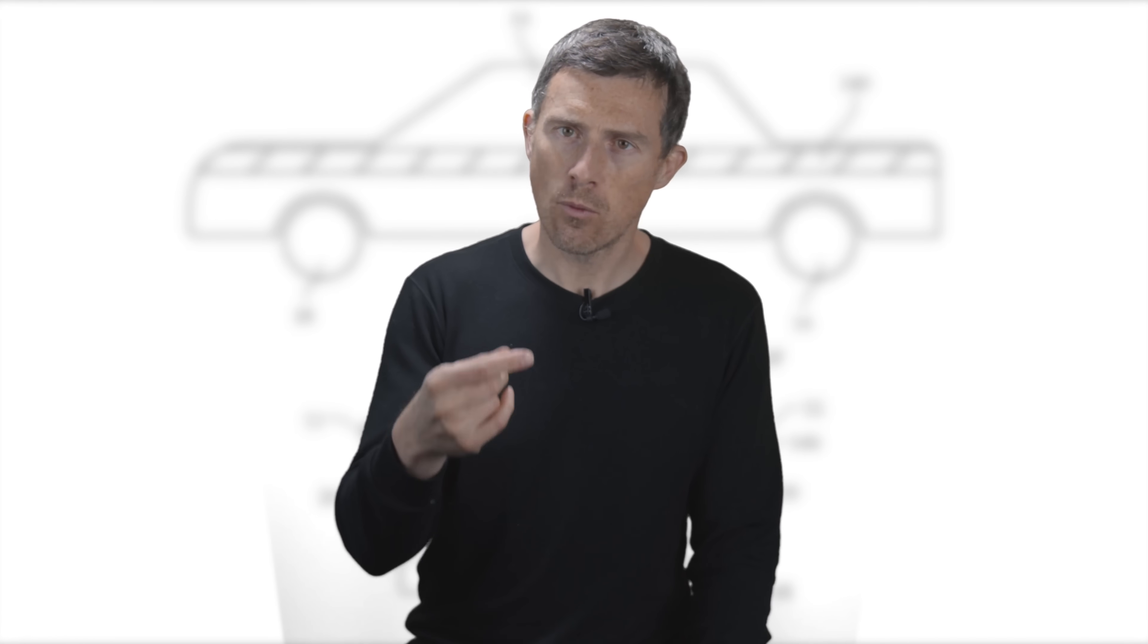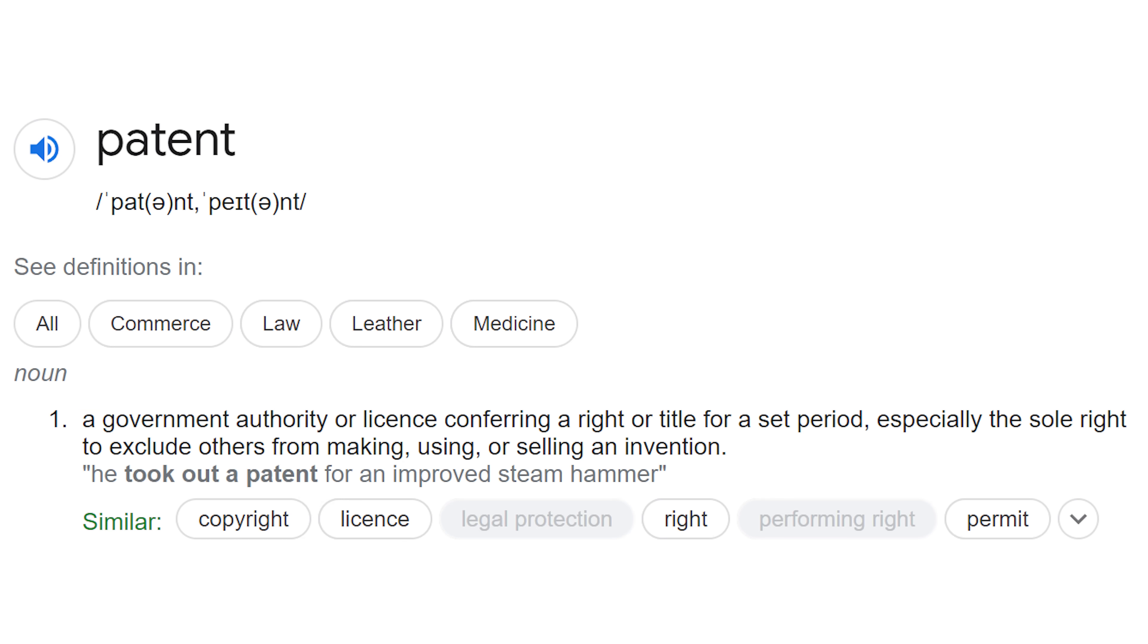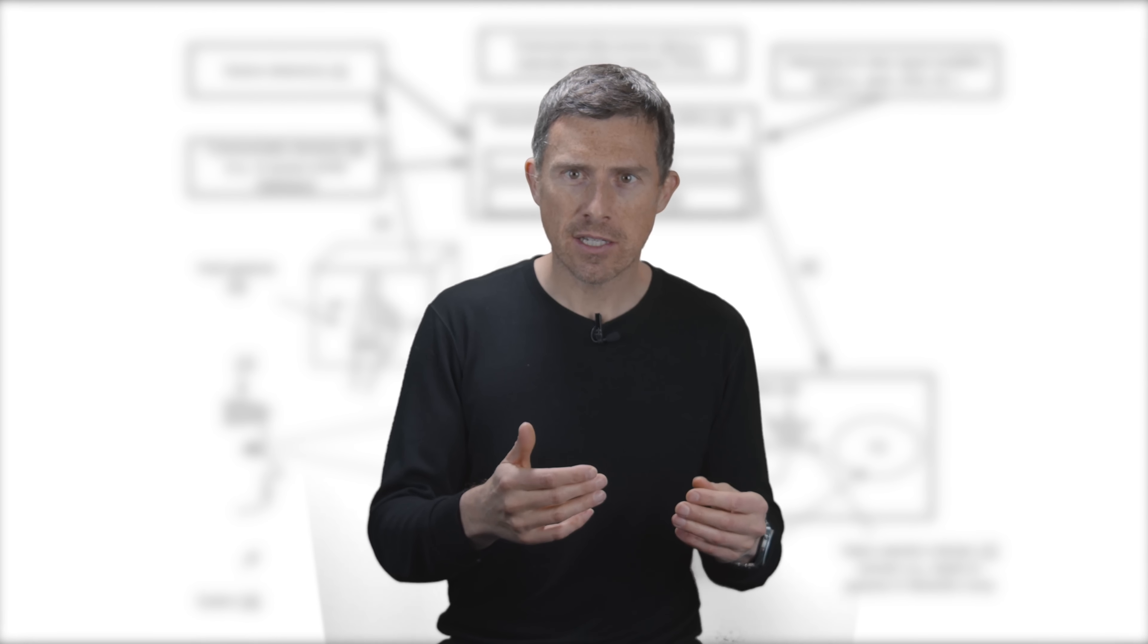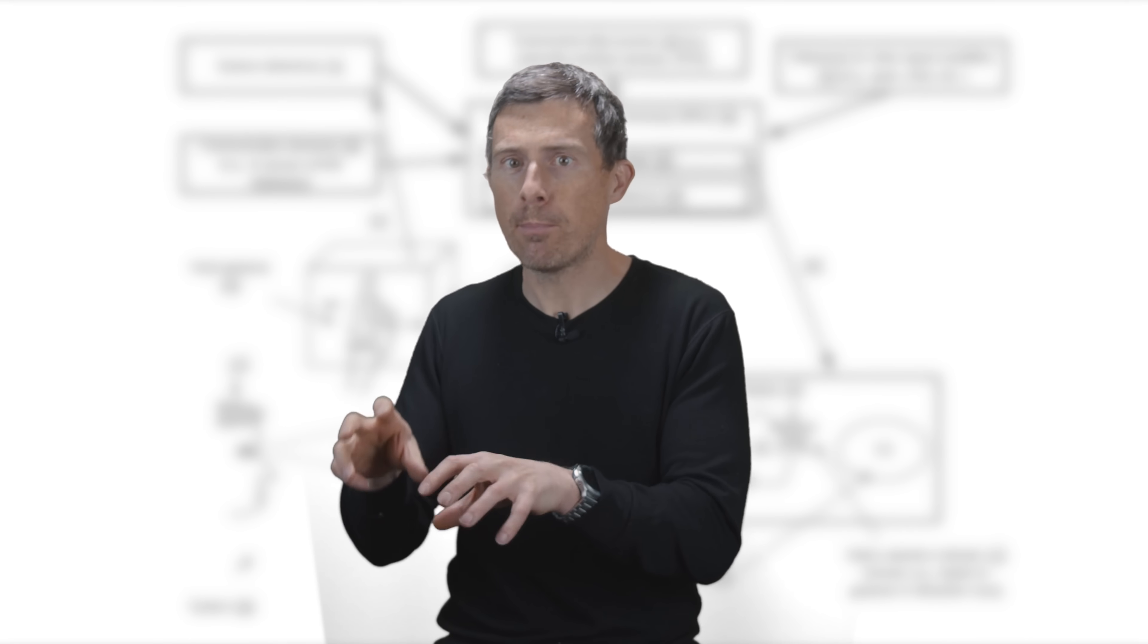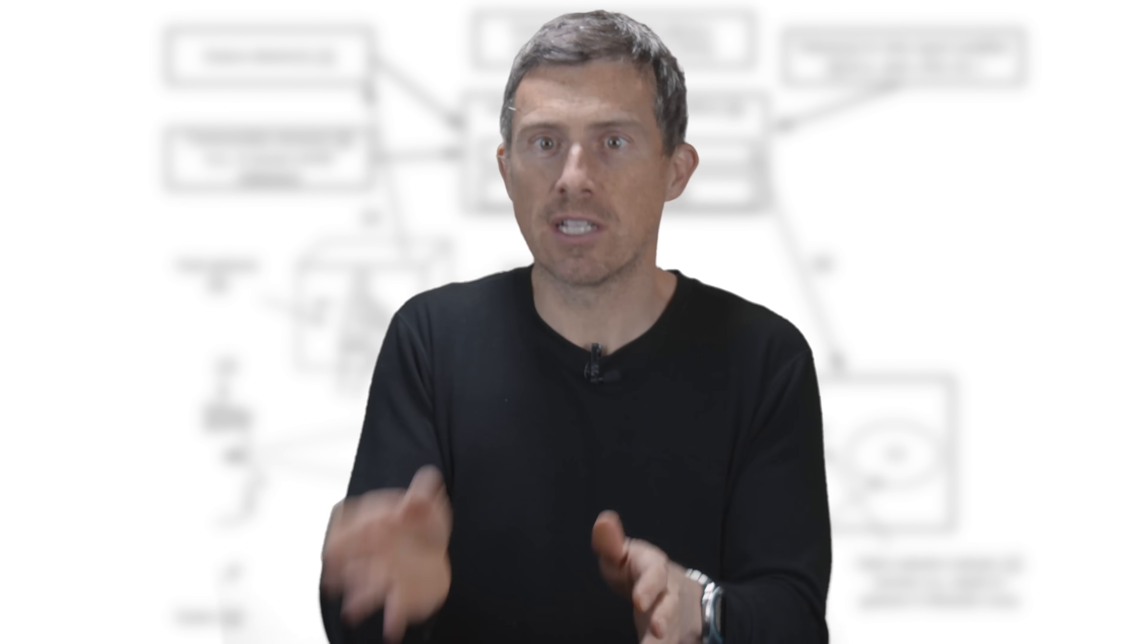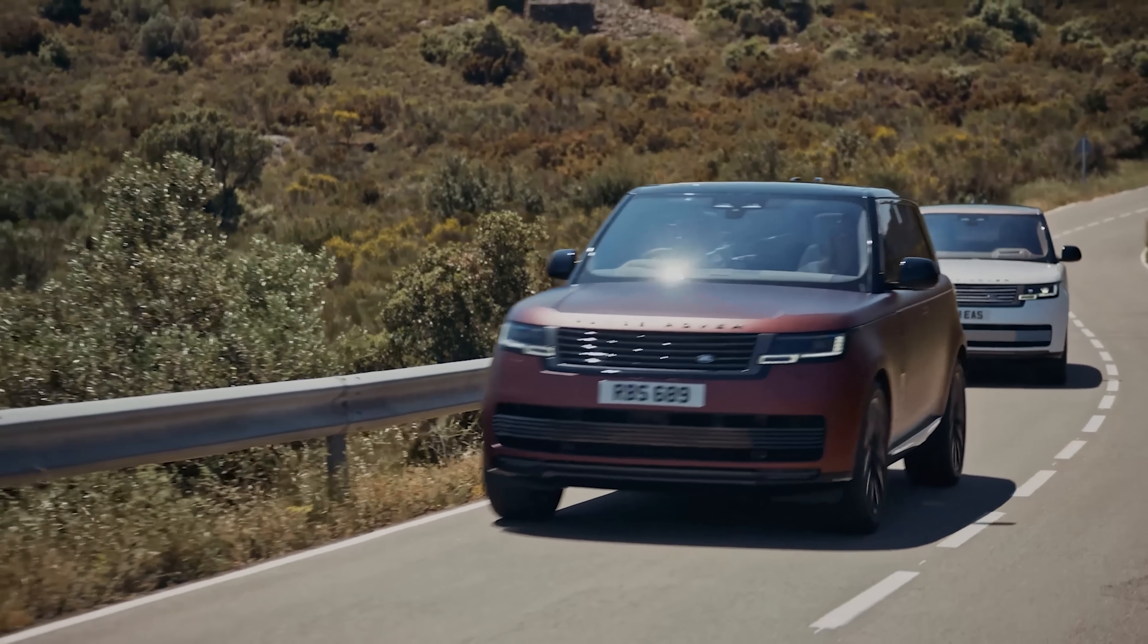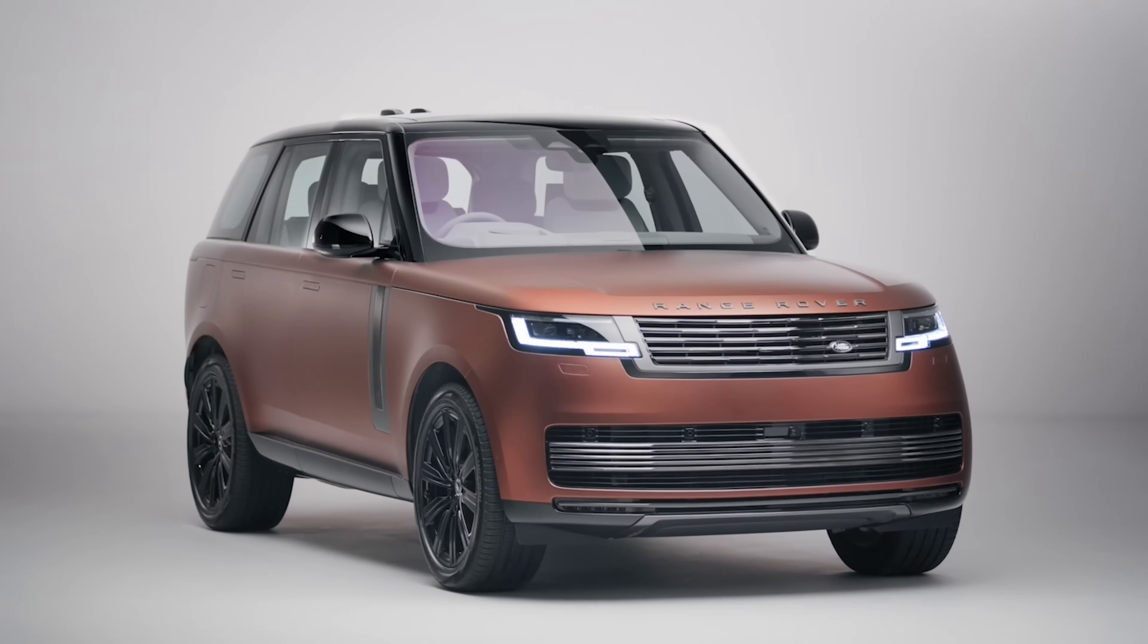Before we get into the meat of the video let's just fully understand what a patent actually is. A government authority or license conferring a right or title for a set period, especially the sole right to exclude others from making, using or selling an invention. Essentially what it means is that inventors can actually legally protect their ideas so other people can't steal them. Manufacturers do this all the time. For instance, Jaguar Land Rover had 125 new patents for its new Range Rover. Right, now let's look at some of the Apple patents.